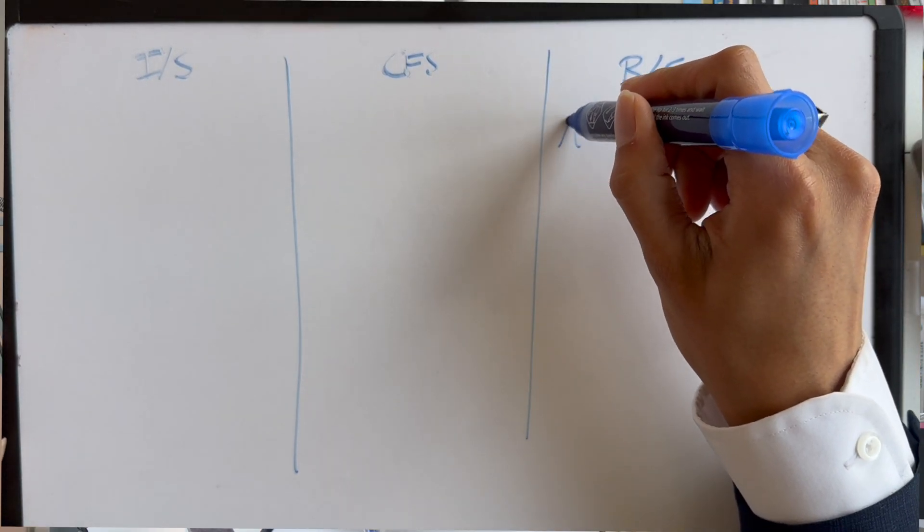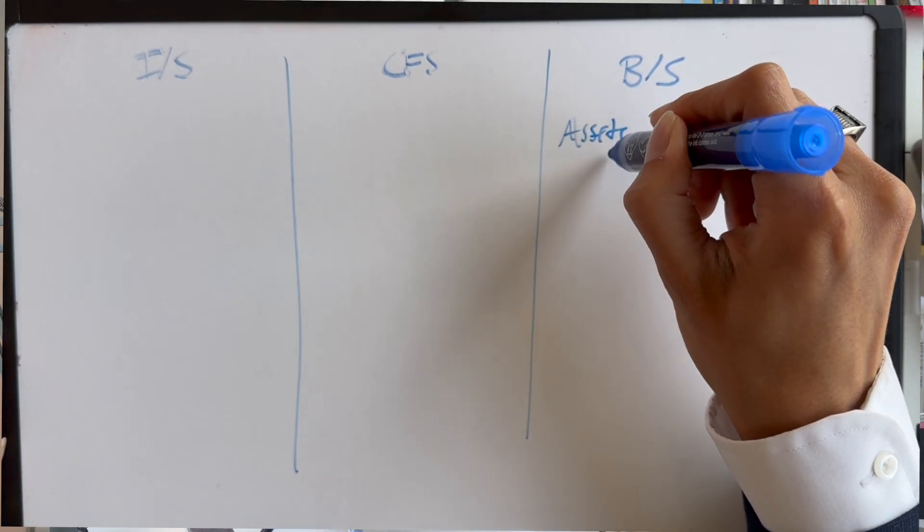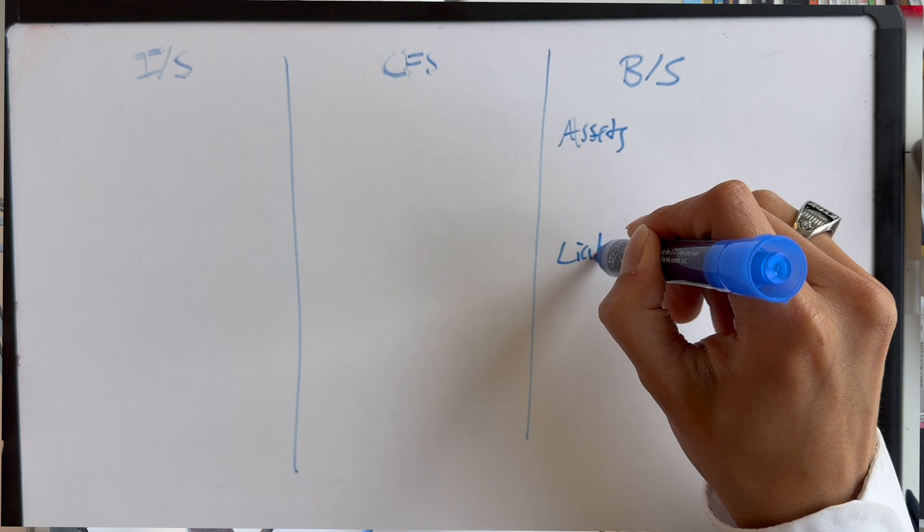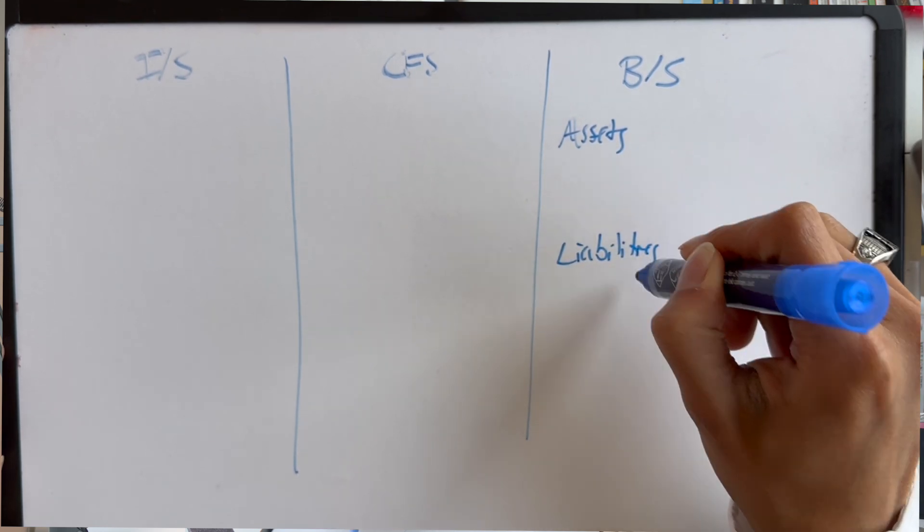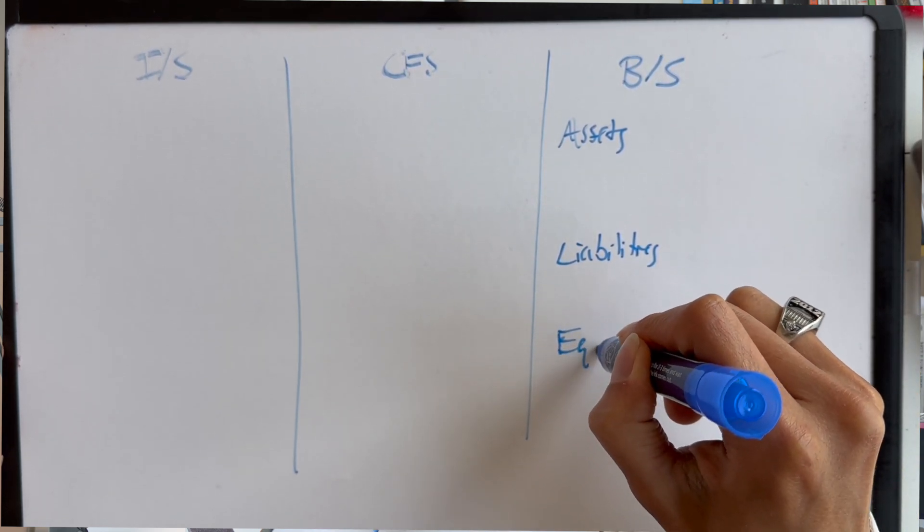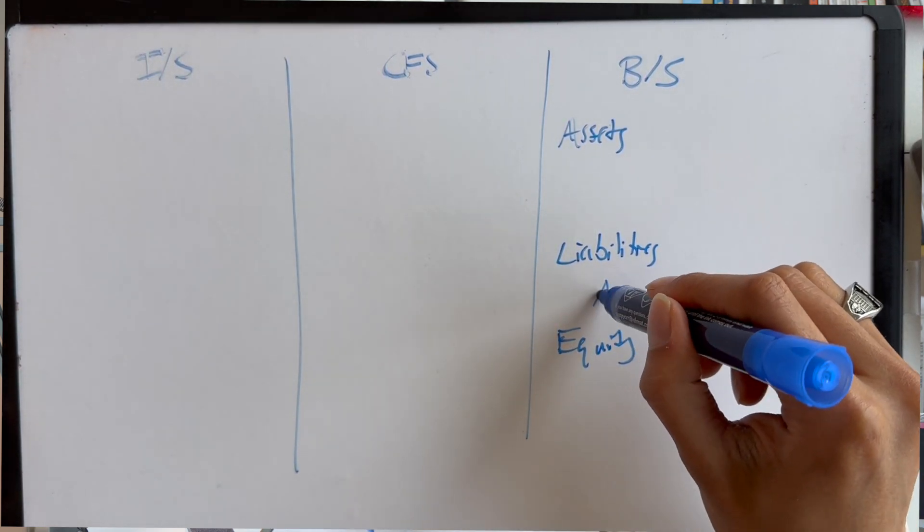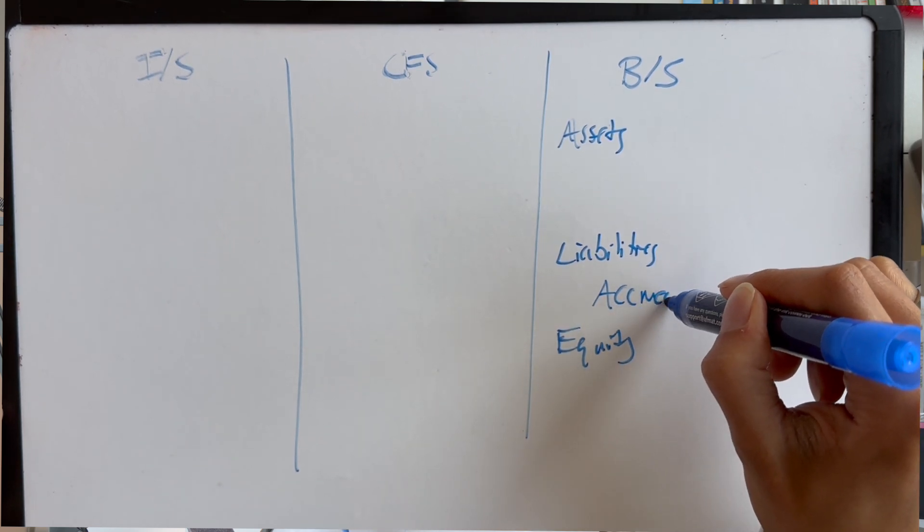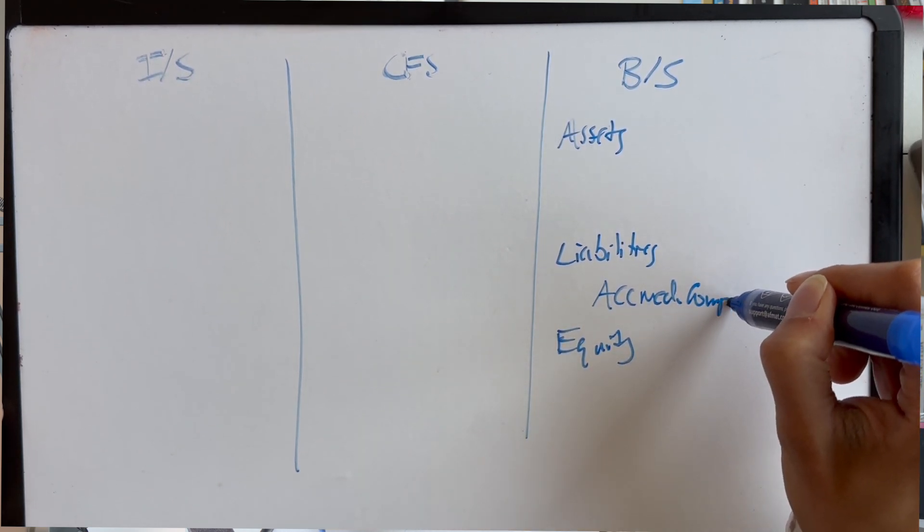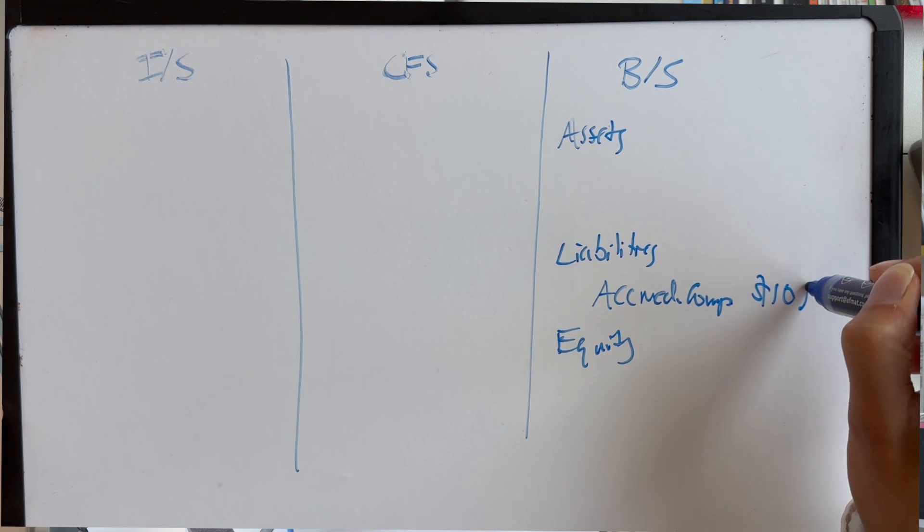So, over here, you have your assets, your liabilities, and your equity. And so, accrued compensation goes up by $10. What does that mean? That's a liability. Accrued comp. And so, this is going to go up by $10.